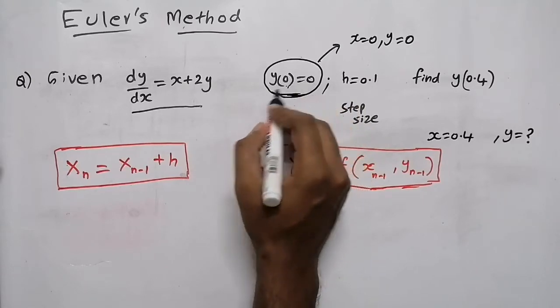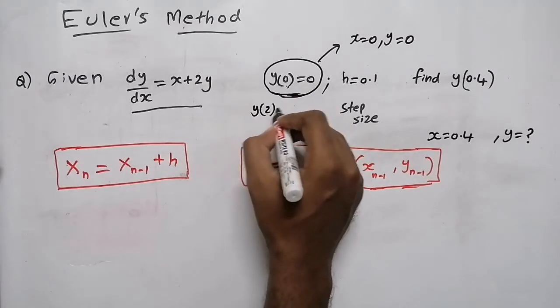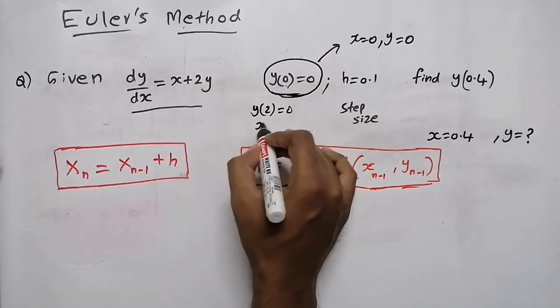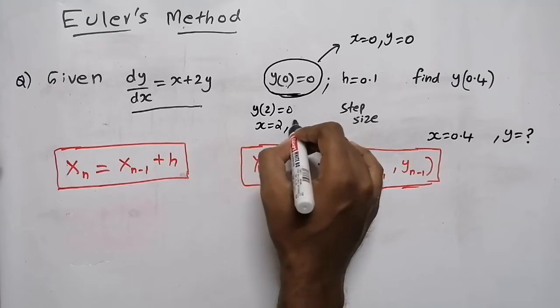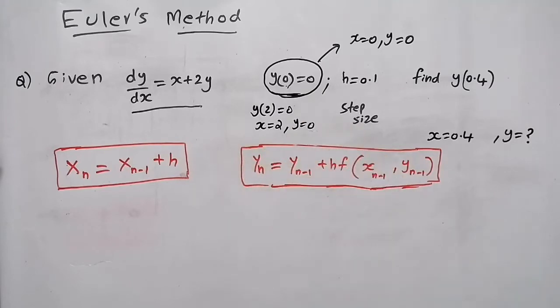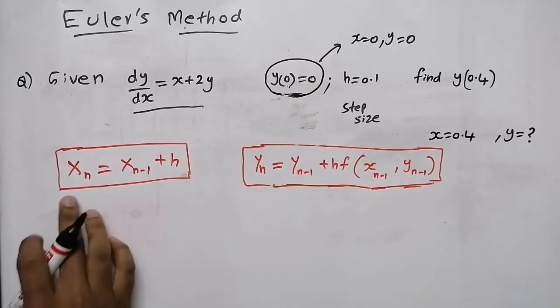For example, if they say y(2) equals 0, that means at x equal to 2 our value of y is 0. That is our initial condition.